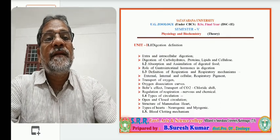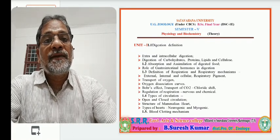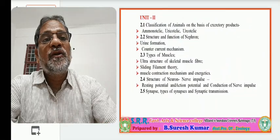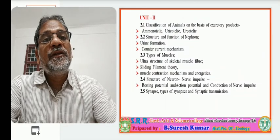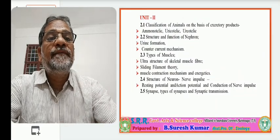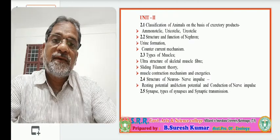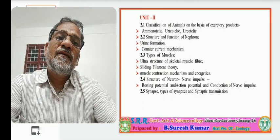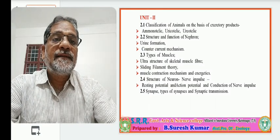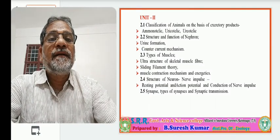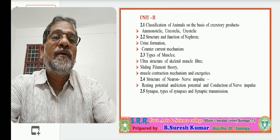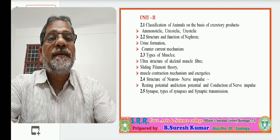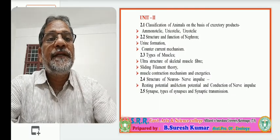In detail the syllabus is there — contents of Unit 1. Unit 2 also includes three lessons. The first lesson covers excretion, the next lesson covers the musculoskeletal system, and the third lesson covers the contents of the neural system. These three lessons are present in Unit 2 in detail.